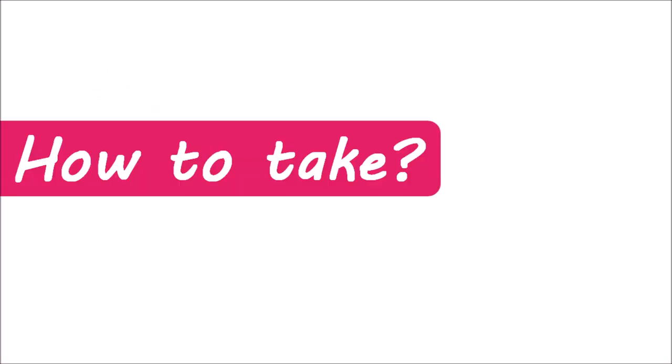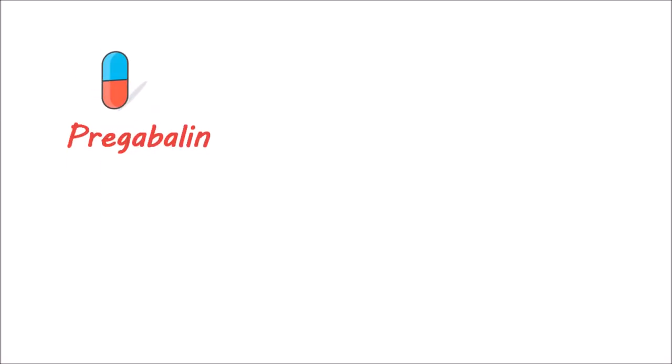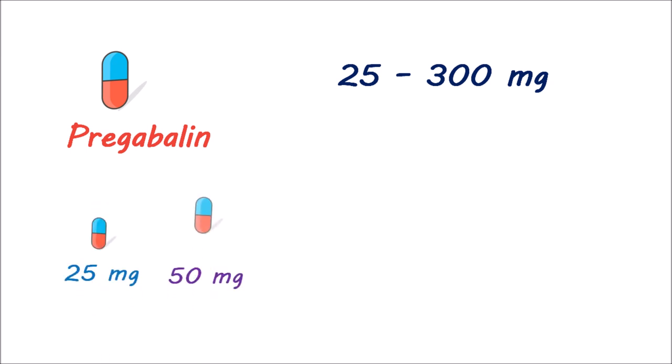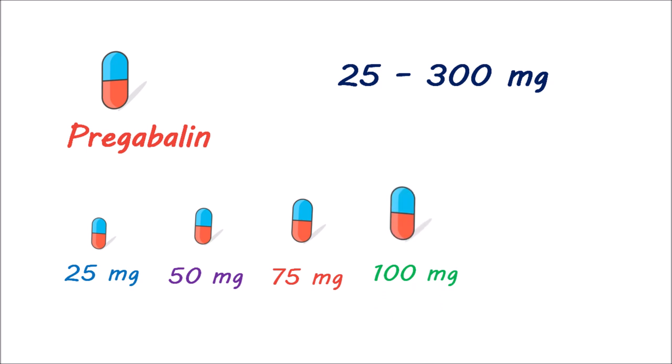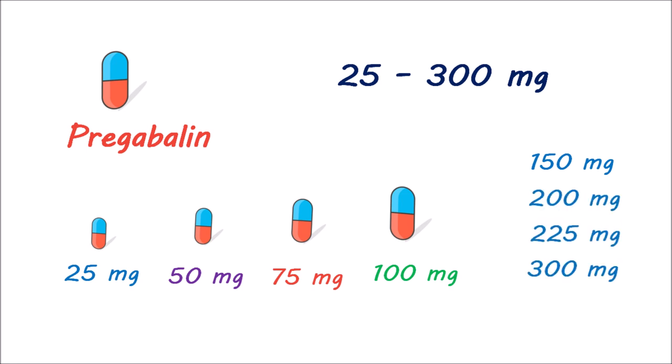Now let's see how to take pregabalin. Pregabalin is available as capsules in different strengths, ranging from 25 mg to 300 mg. Due to its wide clinical indications and dosage regimen, pregabalin is available in doses of 25 mg, 50 mg, 75 mg, 100 mg, 150 mg, 200 mg, 225 mg, and 300 mg.